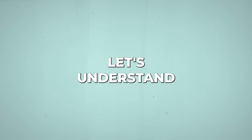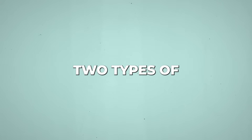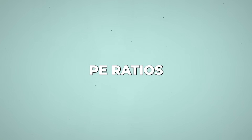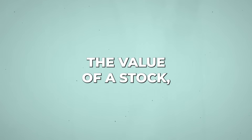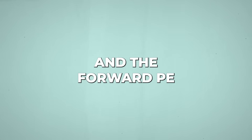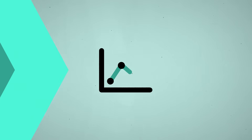Next, let's understand the types of P-E ratios. There are primarily two types of P-E ratios that investors use to assess the value of a stock: the trailing P-E and the forward P-E. Each type provides different insights into a company's valuation and potential future performance.